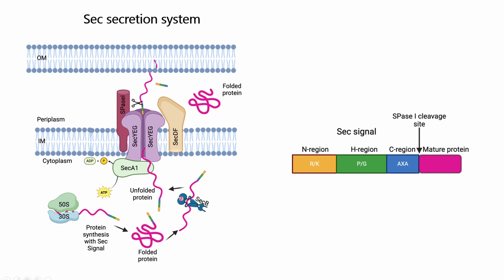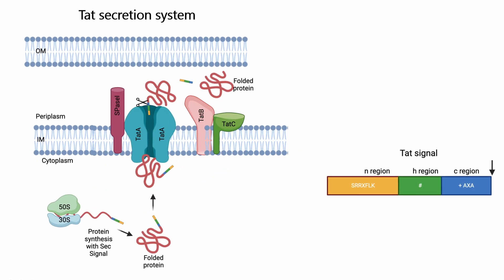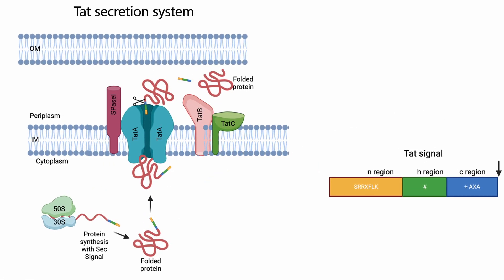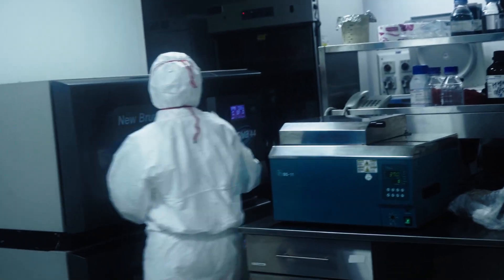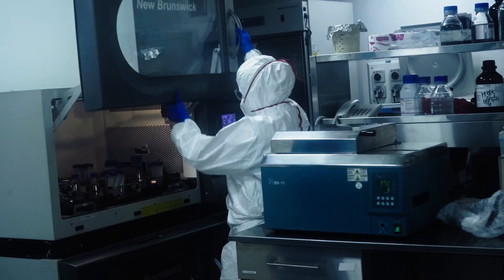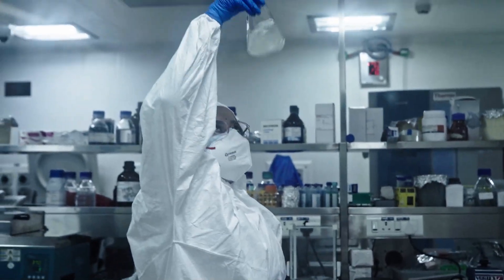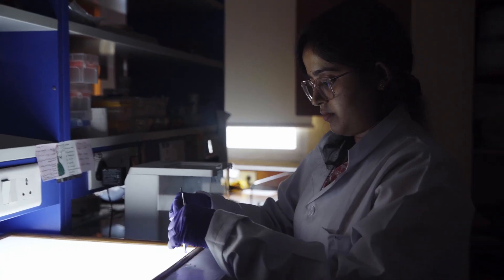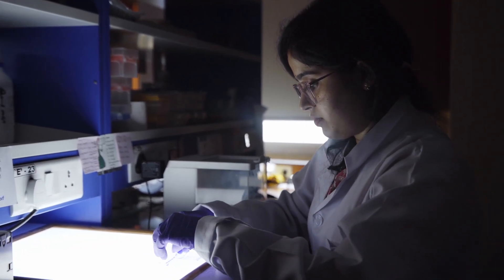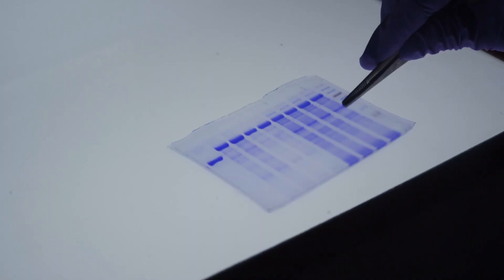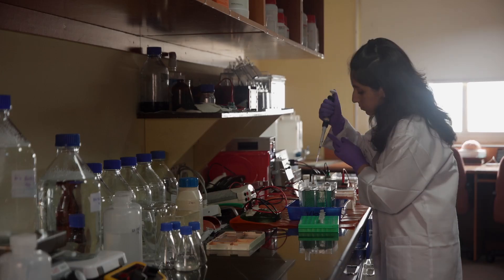MTB secretes proteins into the extracellular space with the help of three different secretion systems: the Sec secretion system, the twin-arginine translocation (TAT) secretion system, and the specialized Type 7 secretion system. Secretion of unfolded proteins into the extracytoplasmic space is majorly involved through the Sec secretion system, and proteins are recognized by their N-terminal signal sequence. In the case of the TAT secretion system, proteins are recognized by a twin-arginine motif present in the N-terminal signal sequence.